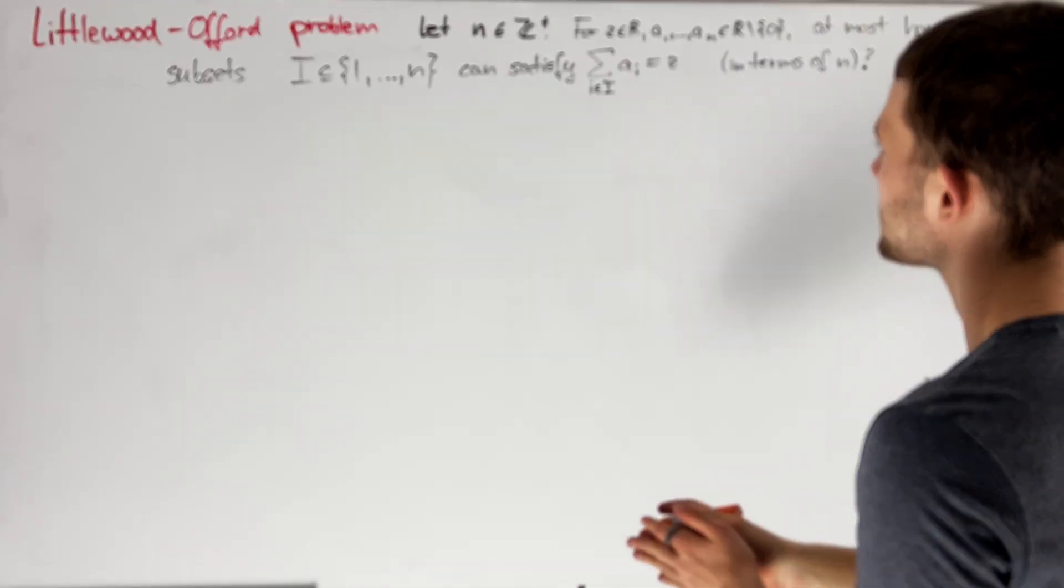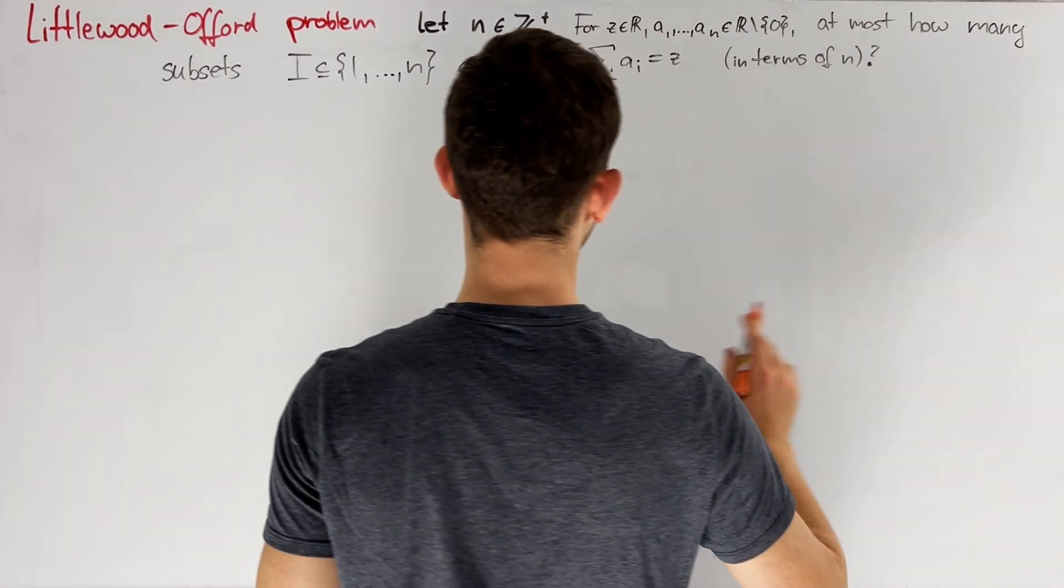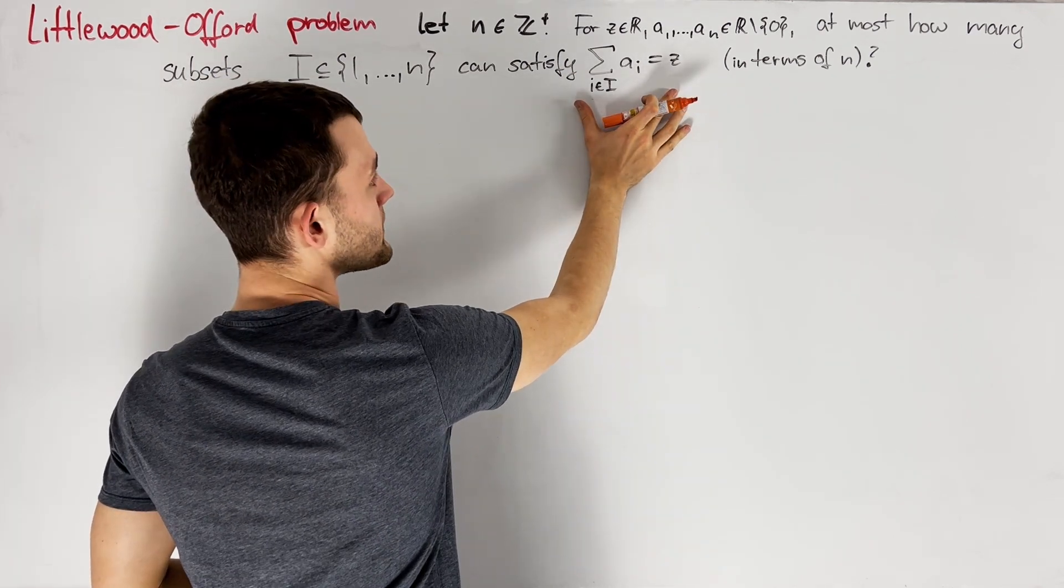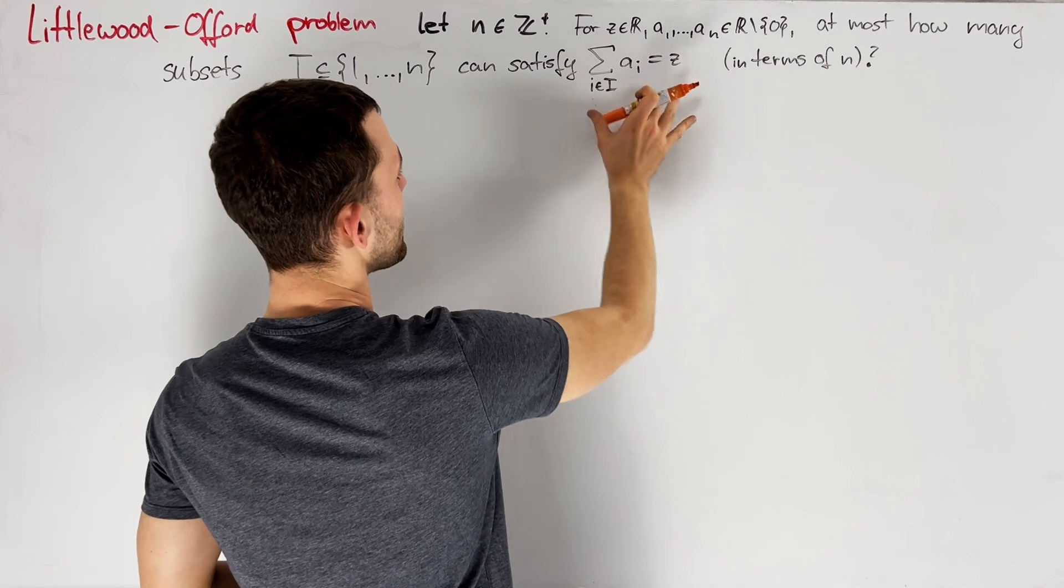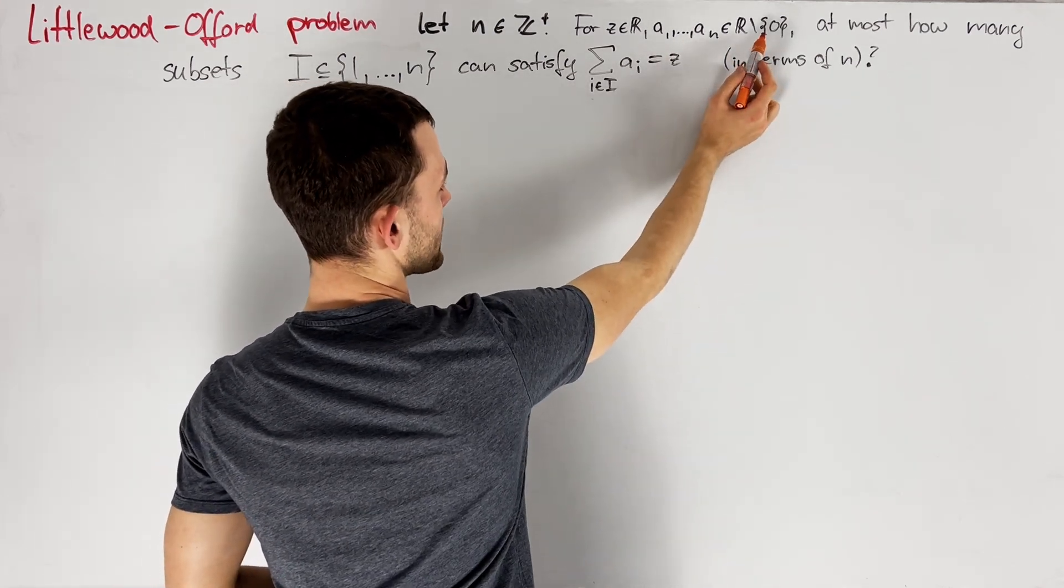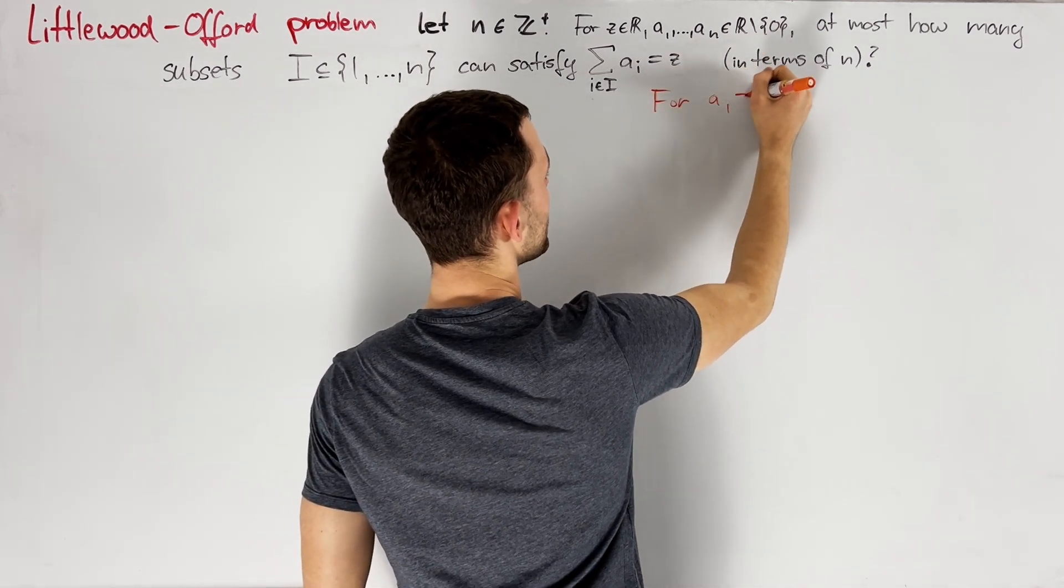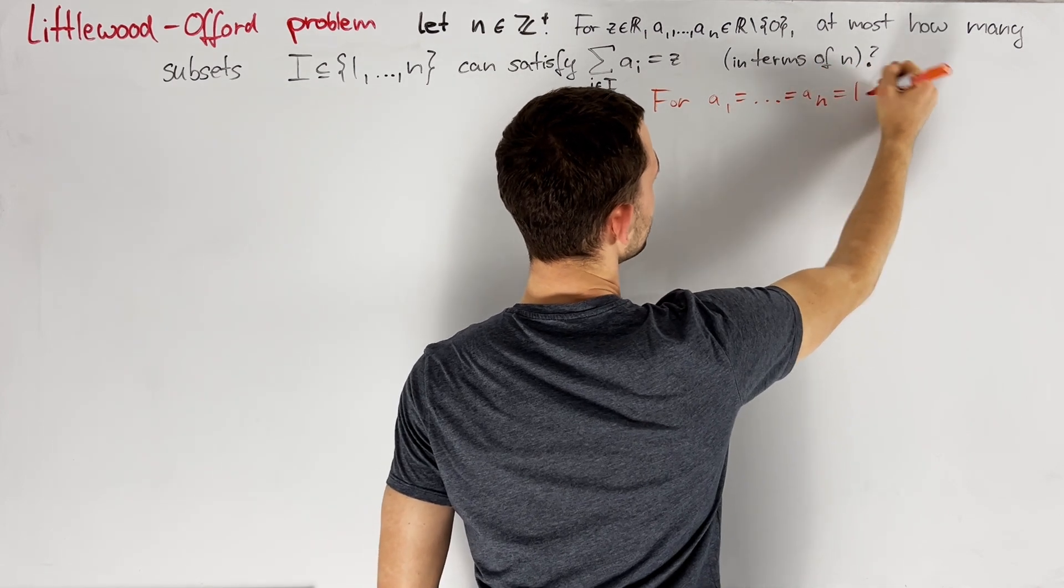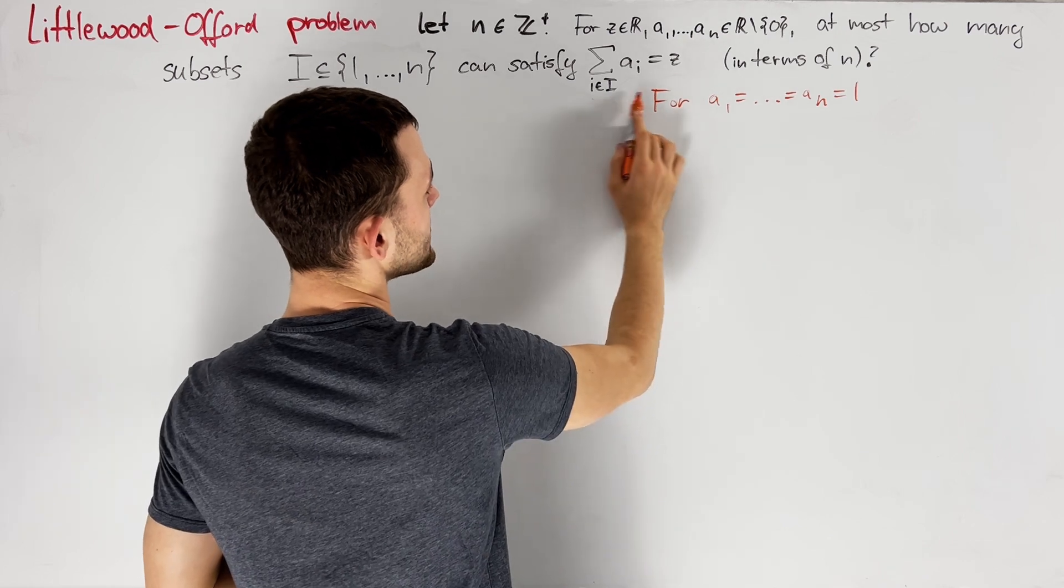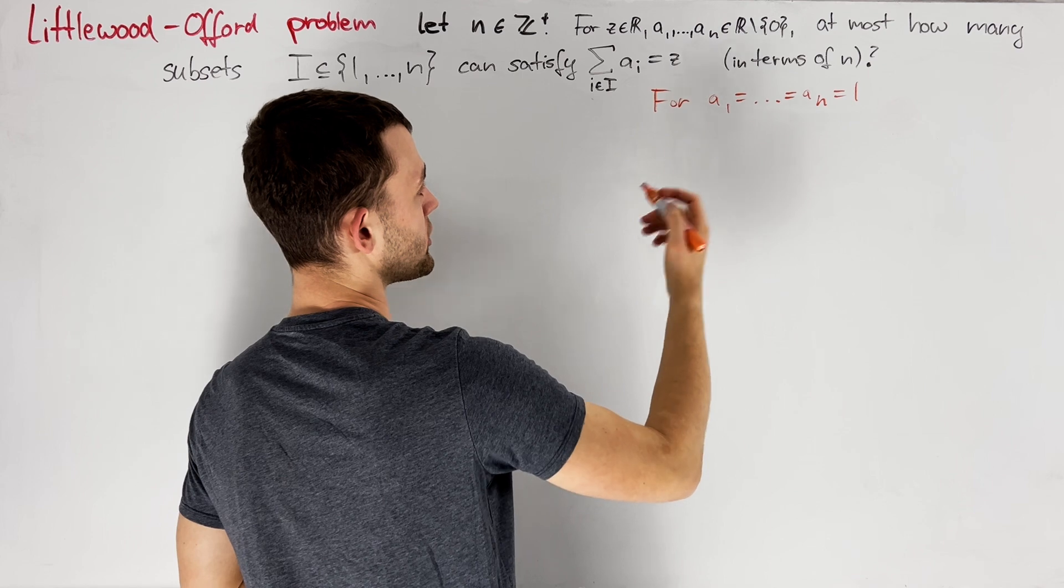First of all, I want to discuss what kind of upper bounds we could hope for. So let's try to find z and ai such that there are many subsets i satisfying this condition. If z and all the ai were equal to 0, then simply all subsets would work here, which is why ai equals 0 is prohibited. The next thing I want to try is setting all the ai equal to, let's say, 1 so that we have a lot of symmetry. If z is non-integral, then no sets i satisfy this condition. And otherwise, the answer will be exactly n choose z.